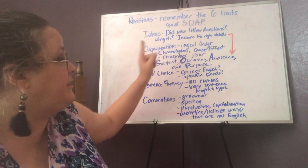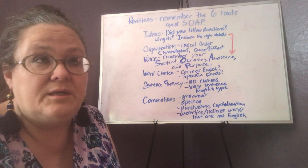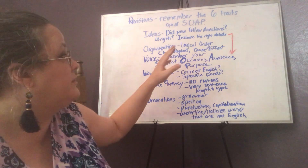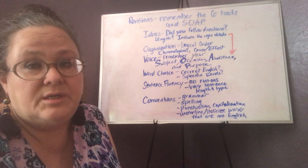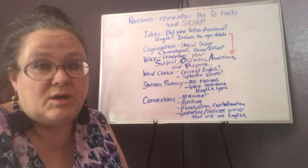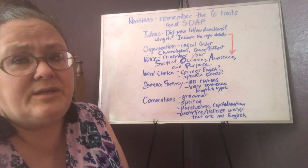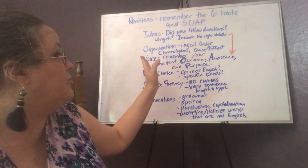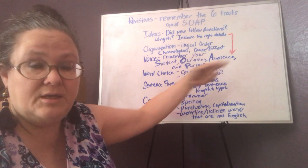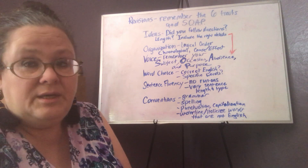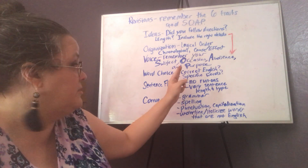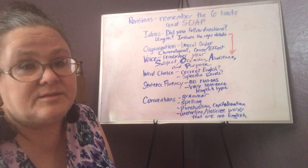So did you follow directions? Length — if I gave you a length, which this time I did — I told you it needed to be, I believe, 10 to 12 sentences. And it should include the right details. In this case, you are to include your name and some interesting facts about yourself, something that might be interesting to me. I'm your audience. And when you're judging the ideas portion of your paper, you need to have the audience in mind. Who are you writing to? In this case, you're writing to me, and you might also be imagining an occasion for which you might need a bio. And we talked about that in another video.